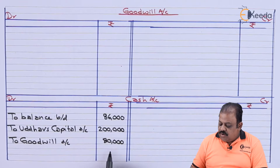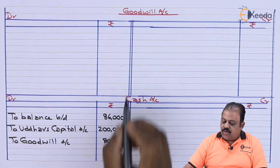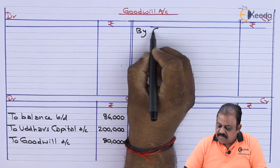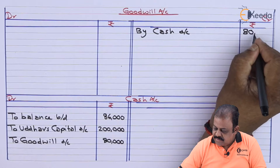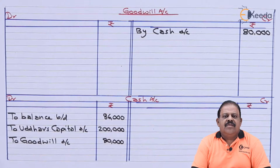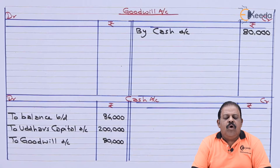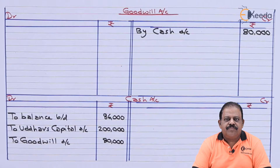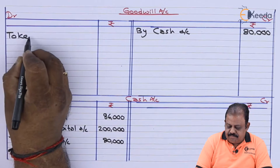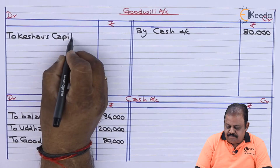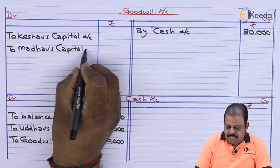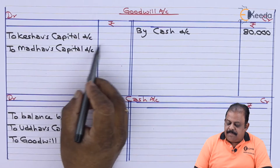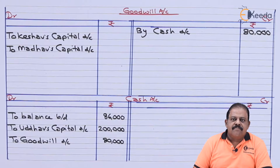The goodwill entry of 80,000 is for goodwill brought in by cash, with the second effect being a credit to the goodwill account and a debit to cash. This amount of goodwill will now be distributed among all partners in the sacrifice ratio. We debit goodwill account and credit Keshav's and Madhav's capital accounts. We need to calculate the sacrifice ratio.